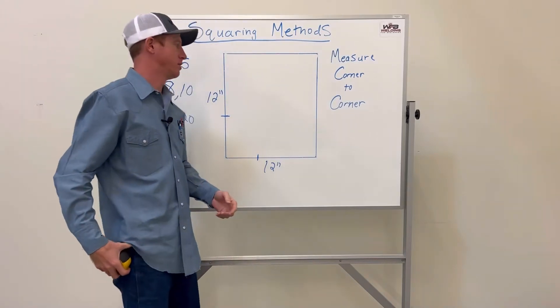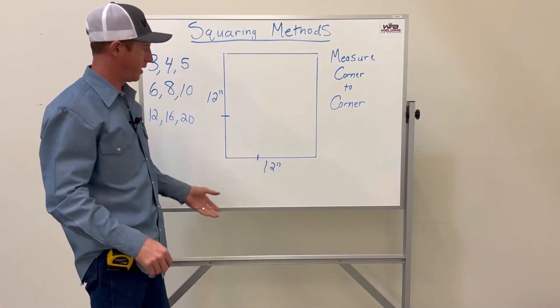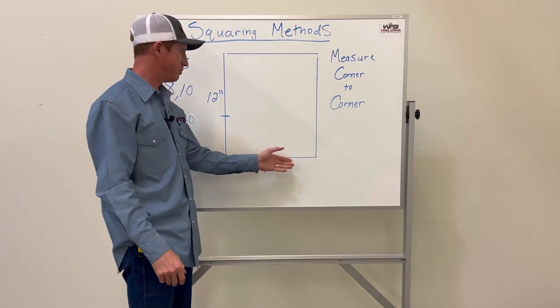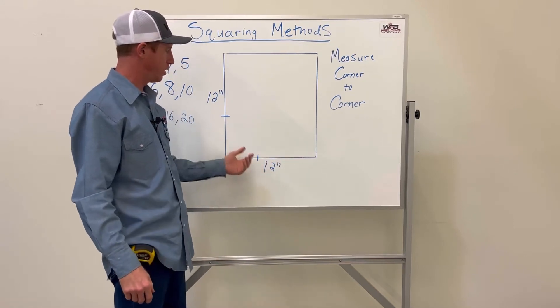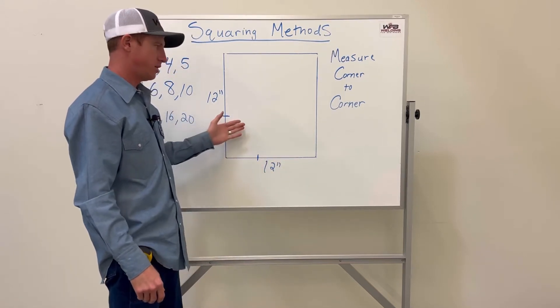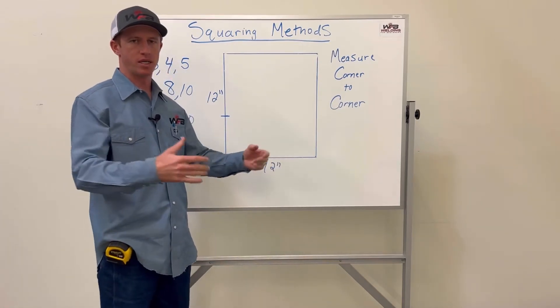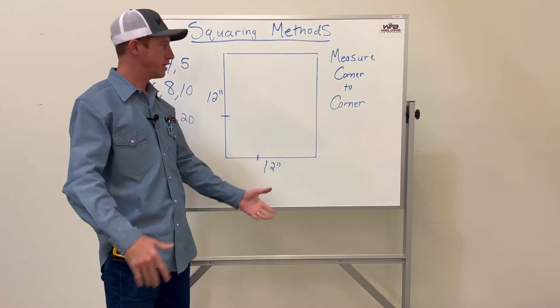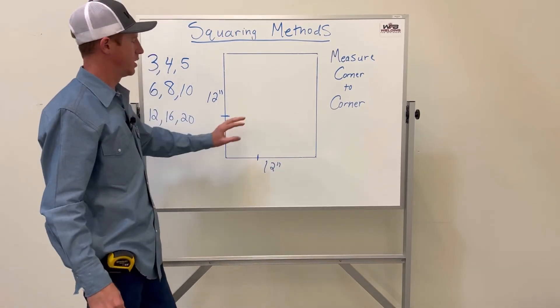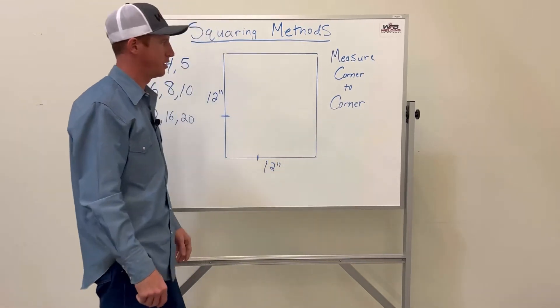Let's talk about some squaring methods. There's a couple different methods. Obviously, if you're building something really small, say 12 inches by 12 inches, you can't go wrong with the speed square. But if you're building a bigger project, these are a couple different squaring methods that I like to use.